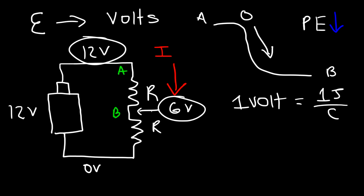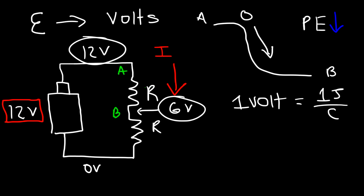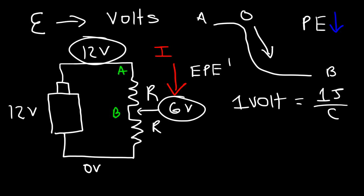A 12-volt battery does 12 joules of work on one coulomb of charge; a one-volt battery does one joule of work on one coulomb of charge. A resistor consumes energy as current flows from high potential to low potential, decreasing the electric potential energy of the charges — that's what gives us a voltage drop across the resistor. The battery does the opposite: it generates an EMF which increases the electric potential energy of the charges.